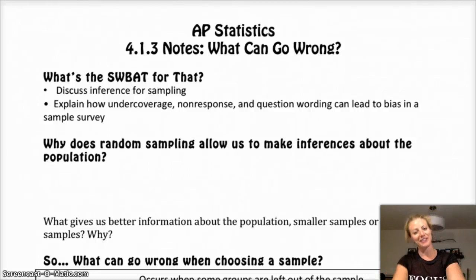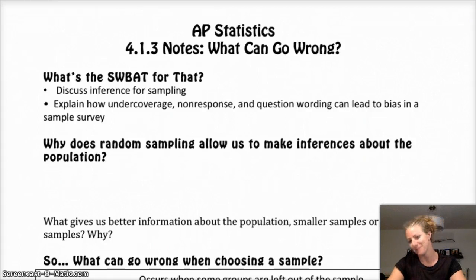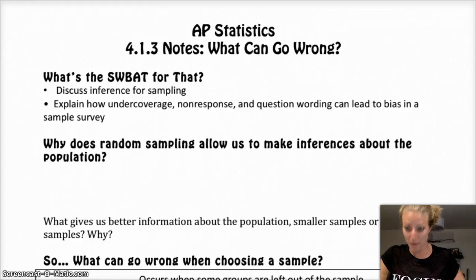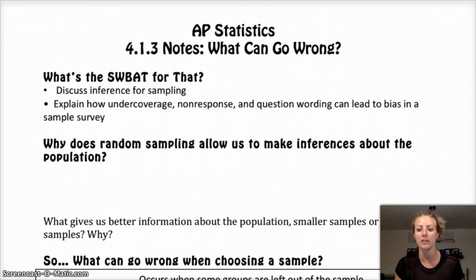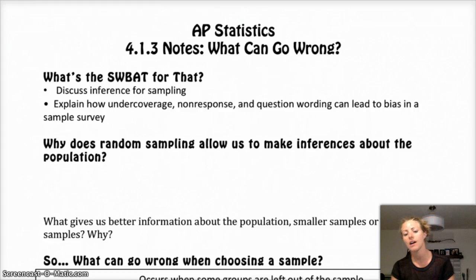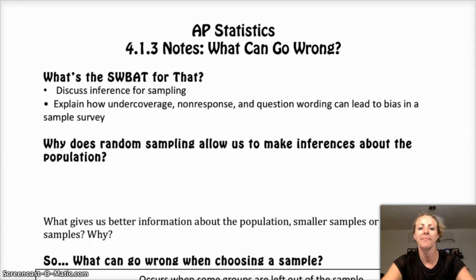Hello, APStaps! Hope you guys are having a nice, fantastic evening — it's probably not evening for you, but it's evening for me. Anyways, today in 4.13, the Practice of Statistics, we're going to talk about what can go wrong when you're sampling. We're also going to talk about why random sampling allows us to make inferences or generalizations about the population, even though samples are just mini pieces of the population. To do that, the first thing we're going to do is look at an applet.